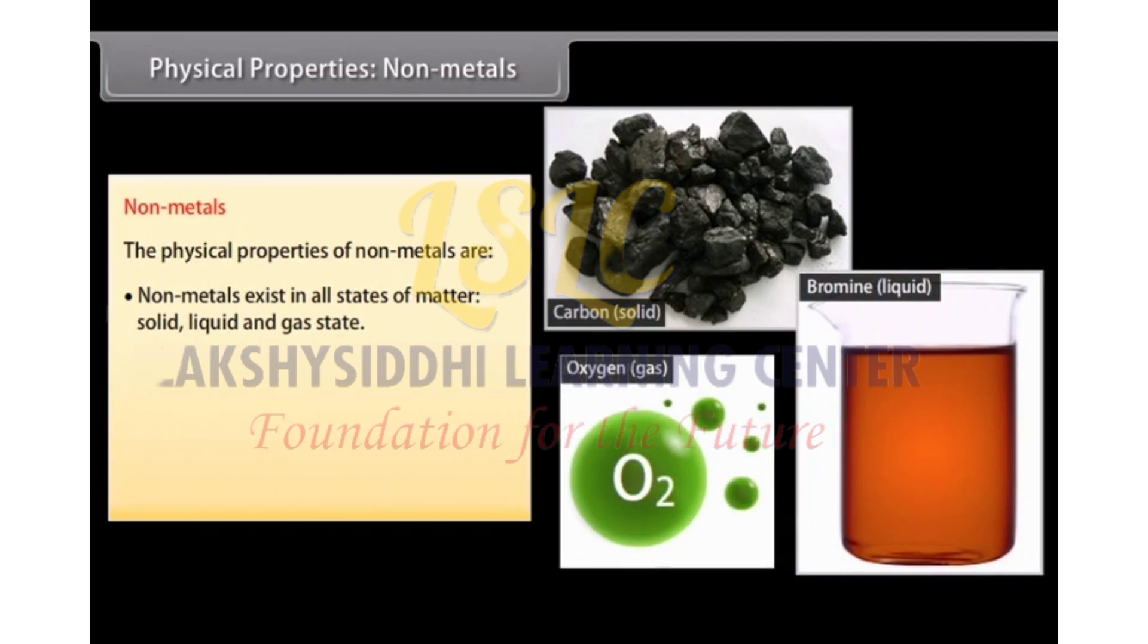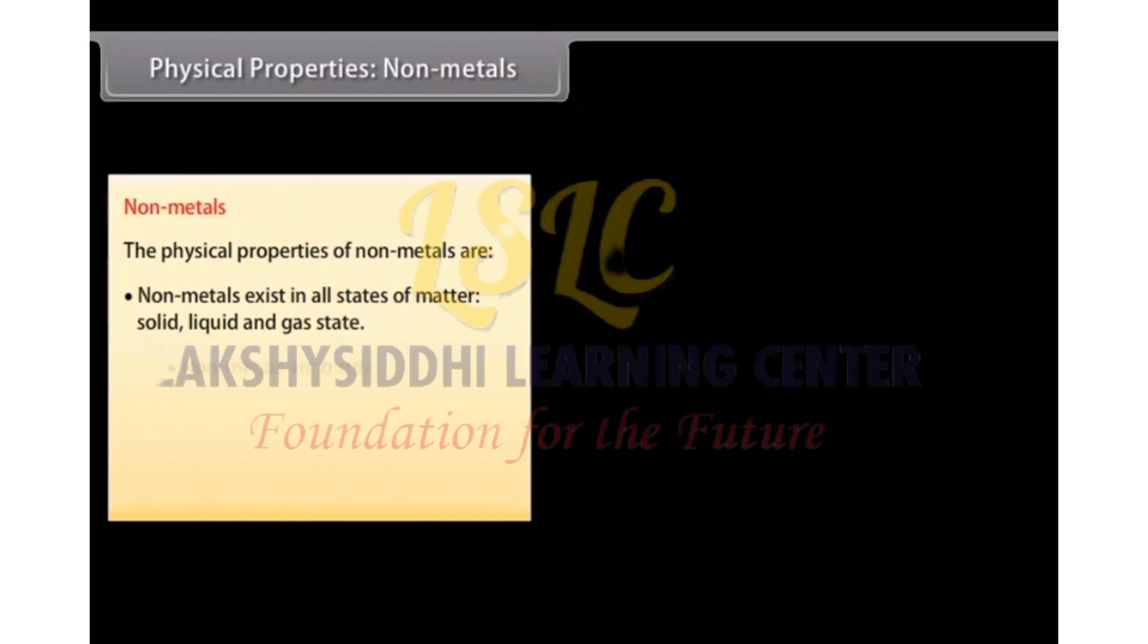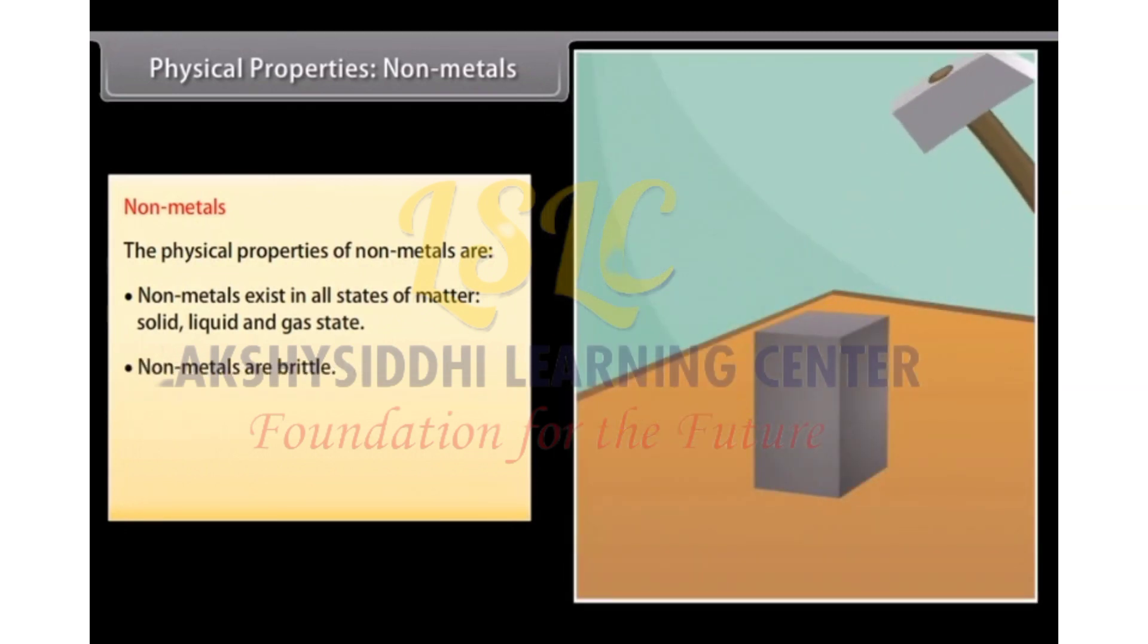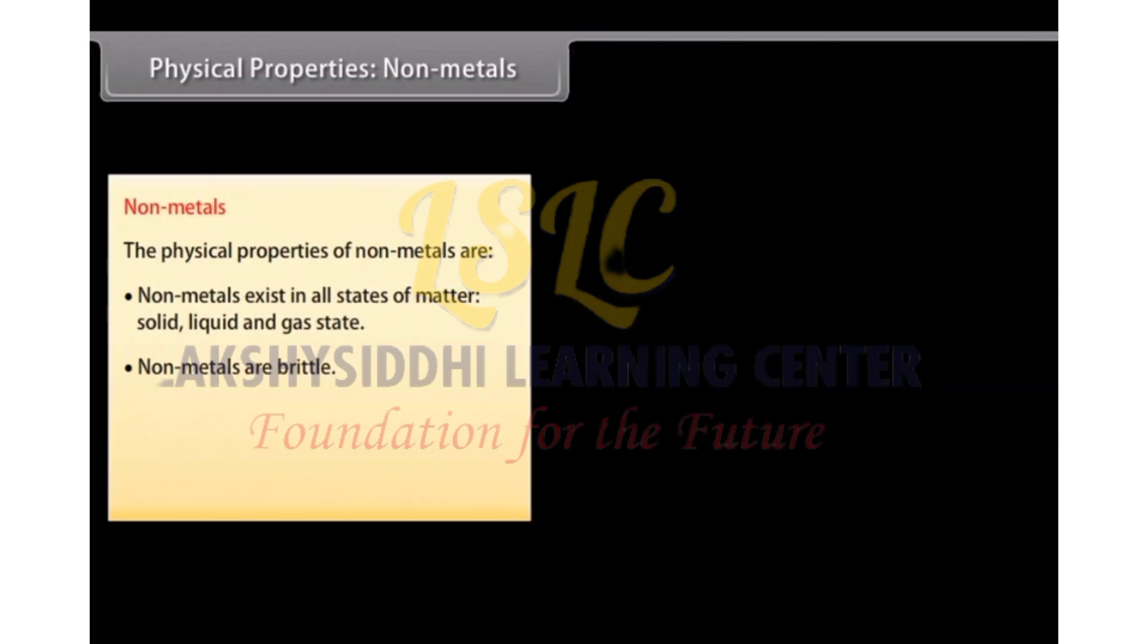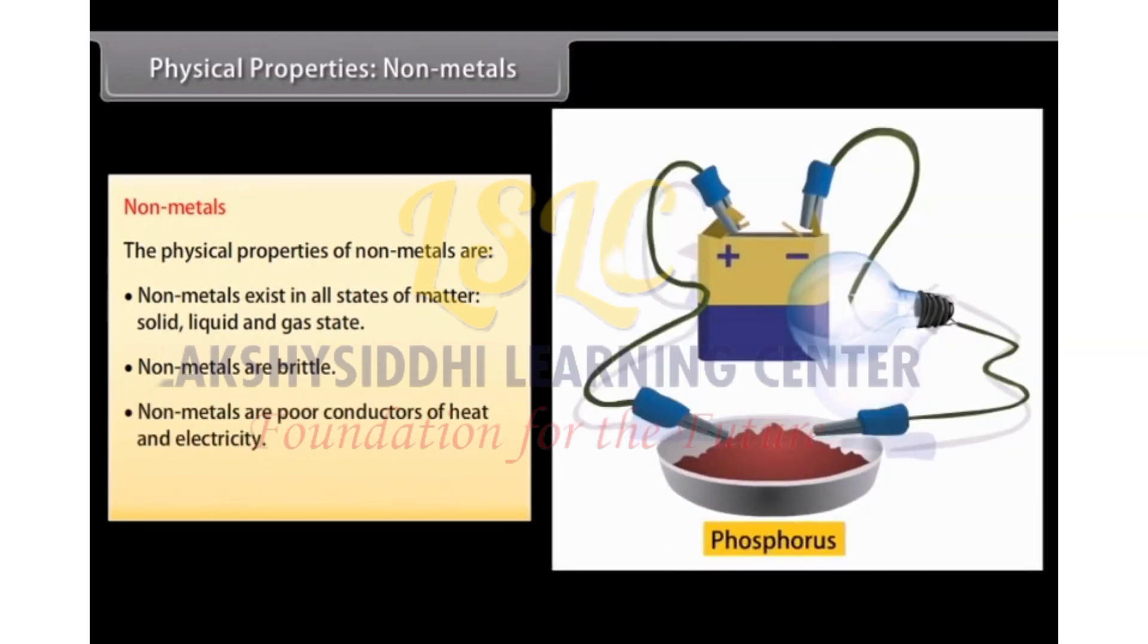Gas: oxygen, chlorine, fluorine. Liquid: bromine. And solid: carbon. Non-malleable and non-ductile. Non-metals are brittle and cannot be rolled into wires or beaten into sheets. Poor conductors of heat and electricity. Non-metals are poor conductors of heat and electricity. Graphite.